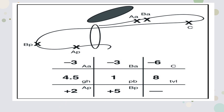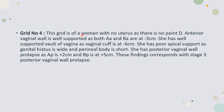Grid 4 answer: This grid is of a woman with no uterus as there is no point D. Anterior vaginal wall is well supported as both Aa and Ba are at minus 3 centimeters. She has well-supported vault of vagina as the vaginal cuff is at minus 6. She has poor apical support as genital hiatus is wide and perineal body is short, indicating loss of support from arcus tendinous fascia and perineal body. She has posterior vaginal wall prolapse with Ap at plus 2 and Bp at plus 5 — Stage 3 posterior vaginal wall prolapse.